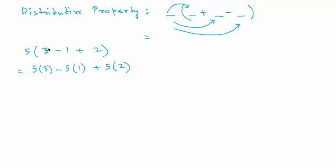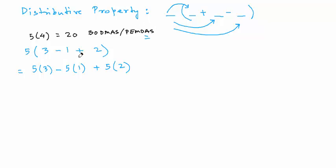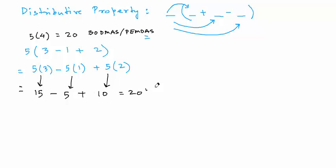If you apply BODMAS on this expression, you work the parentheses first: 3 minus 1 is 2, 2 plus 2 is 4, and 5 times 4 is 20, so the answer is 20. Evaluating the same expression using the distributive property: 5 times 3 is 15, minus 5 times 1 is 5, plus 5 times 2 is 10. So 15 minus 5 is 10, and 10 plus 10 is 20 — still the same answer.